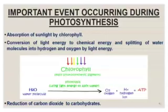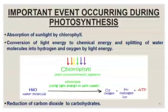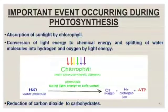An equation is given below where a water molecule, in the presence of chlorophyll, disintegrates into oxygen and hydrogen. Energy is also released during this process in the form of ATP, which stands for adenosine triphosphate. The third major event is the reduction of carbon dioxide to carbohydrates — glucose — which is the food for green plants.